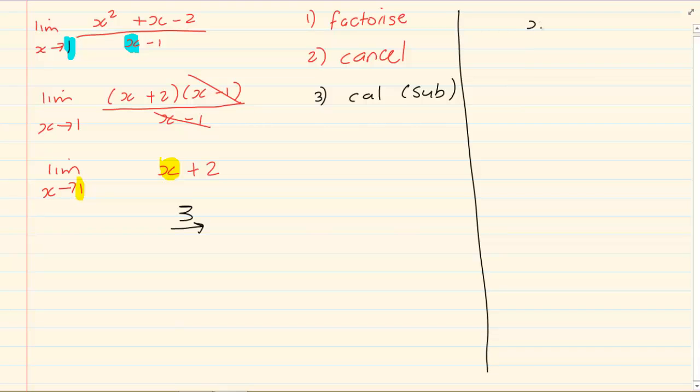If you've got x cubed plus 1, all over x plus 1 and our limit x tends to be negative 1. Now in our previous video, we showed you how to factorize cube functions. If we continue to factorize x cubed plus 1, we would have x plus 1 times x squared minus x plus 1, all over x plus 1.